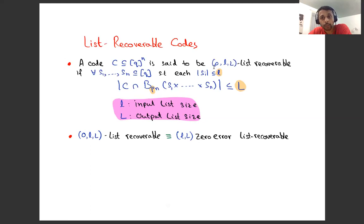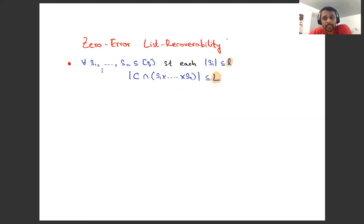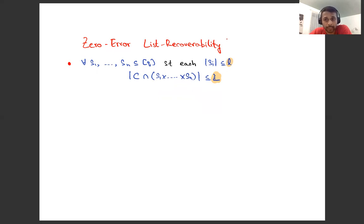The case when ρ is zero is also interesting and is called zero error list recoverable — this is an important special case. A code is (ℓ, L) zero error list recoverable if for every S₁, S₂, …, Sₙ subsets of Q such that each list is of size at most little ℓ, the number of codewords in S₁ × S₂ × … × Sₙ is at most capital L.